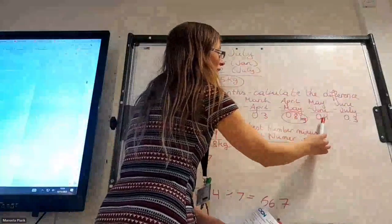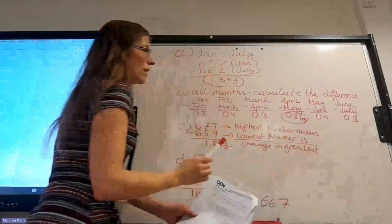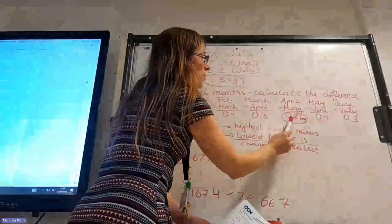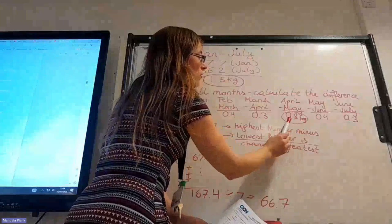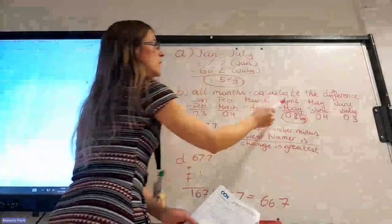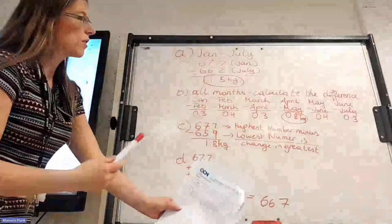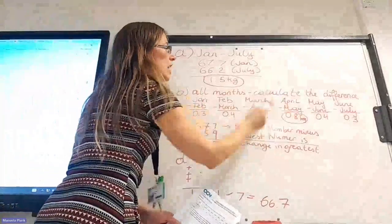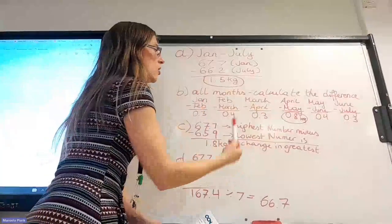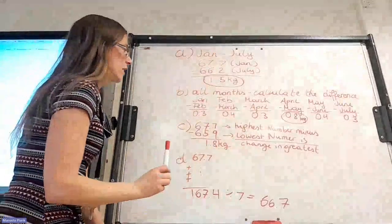And then we check which number is the greatest. So we have 0.3, 0.4, and so on. But the biggest number, or the greatest number, or the highest number, is 0.8 kilograms. So clearly, the change from April to May was the greatest, because this is when the person has changed in weight really drastically. All the other months, there hasn't been much change.